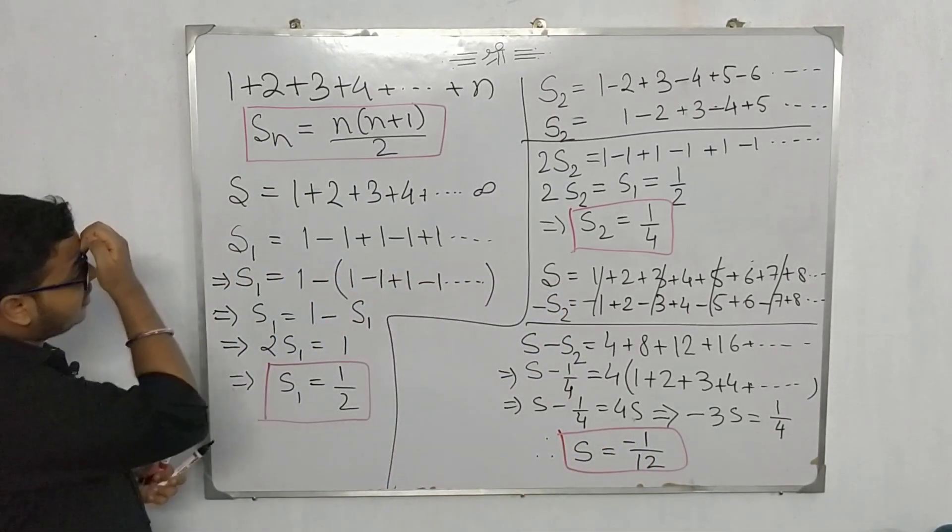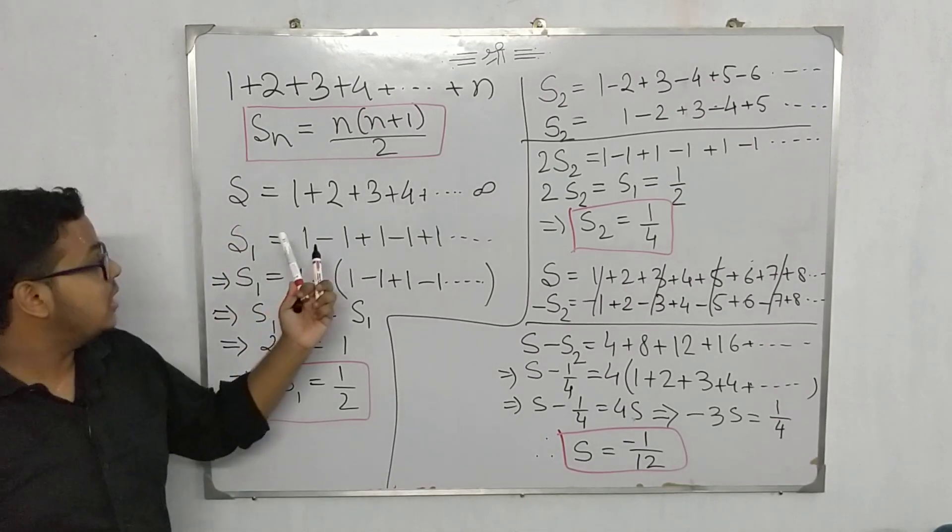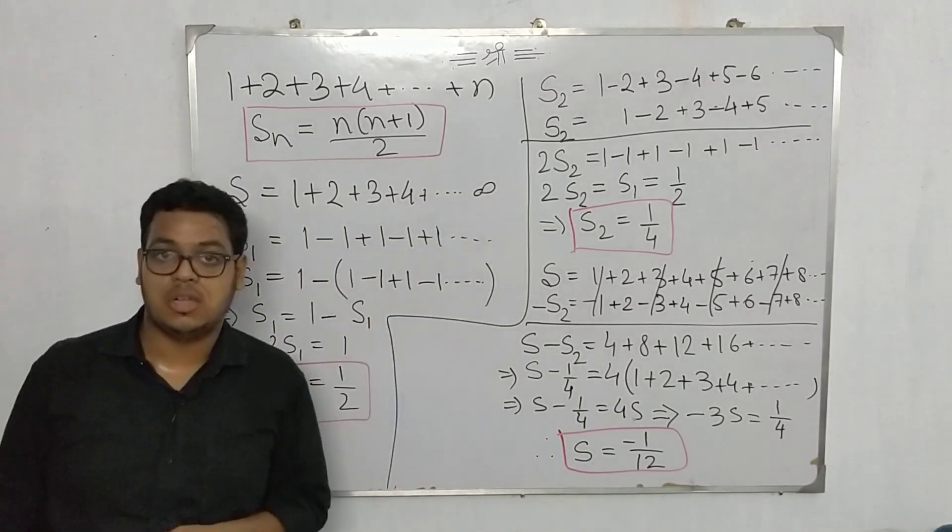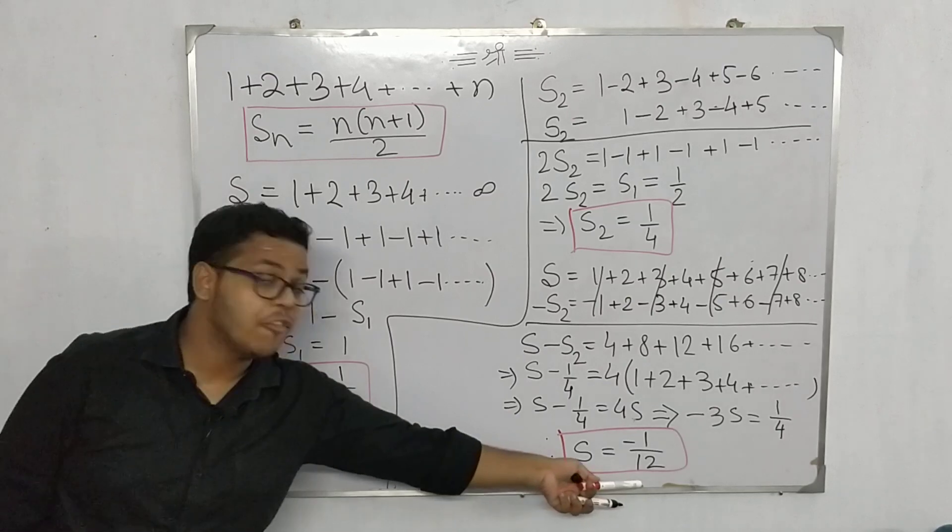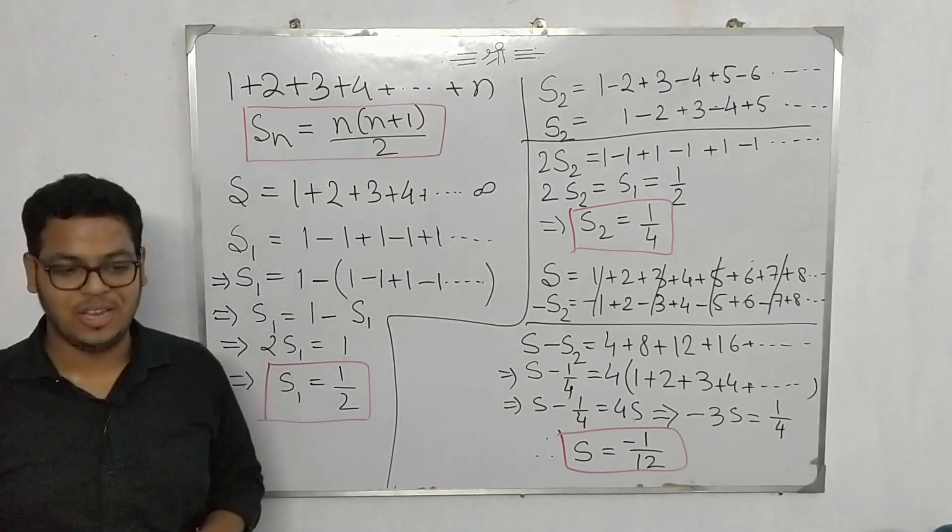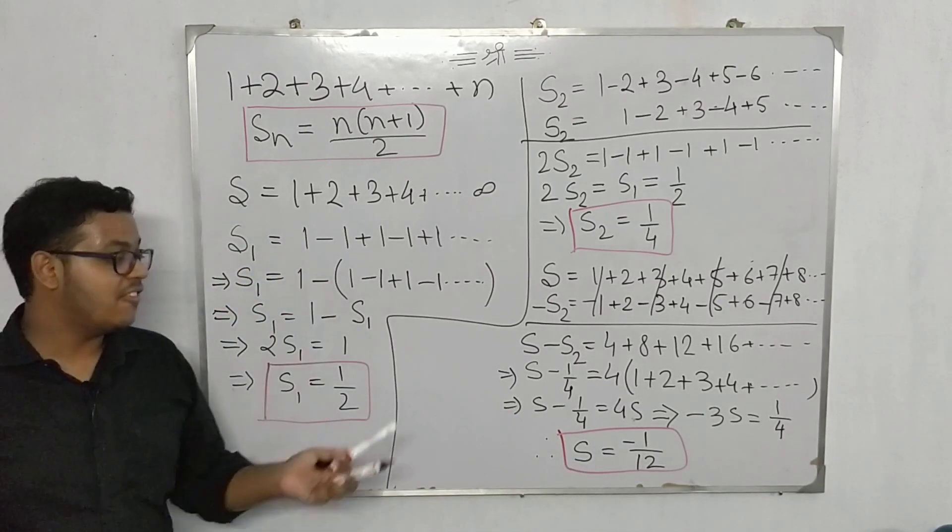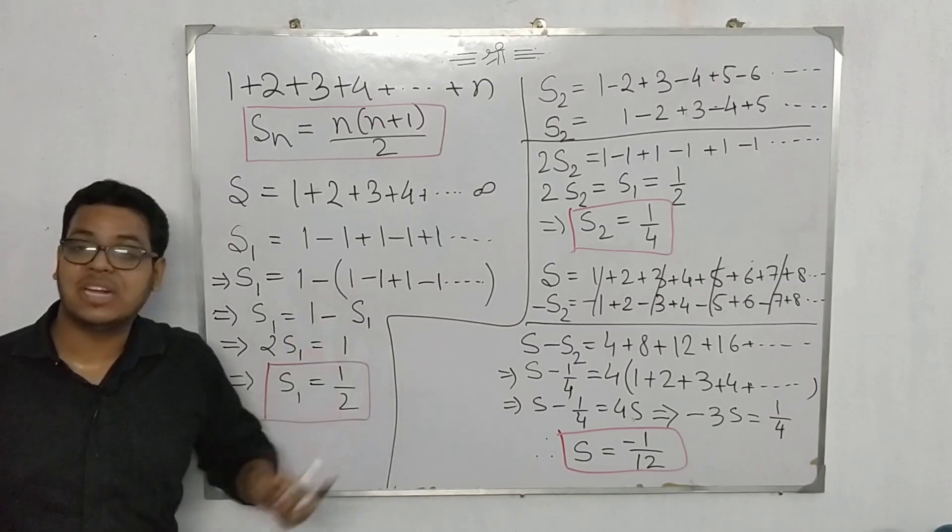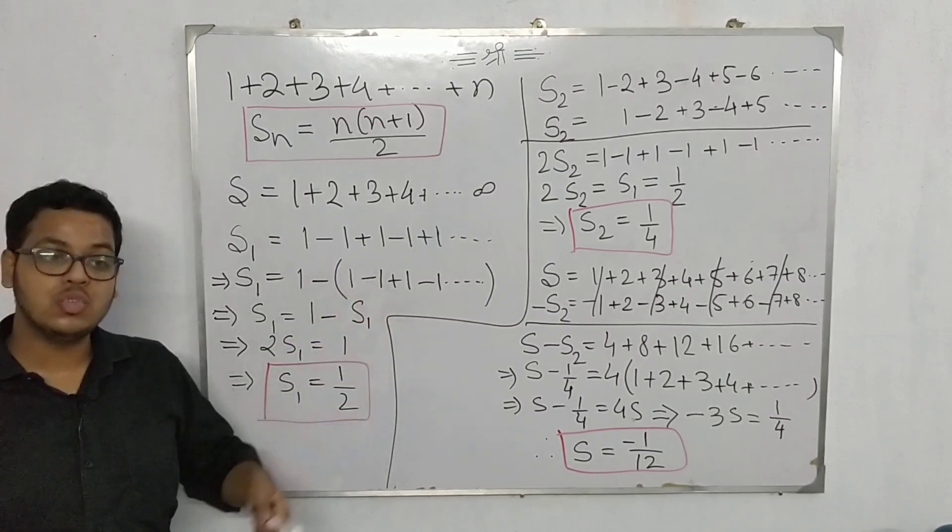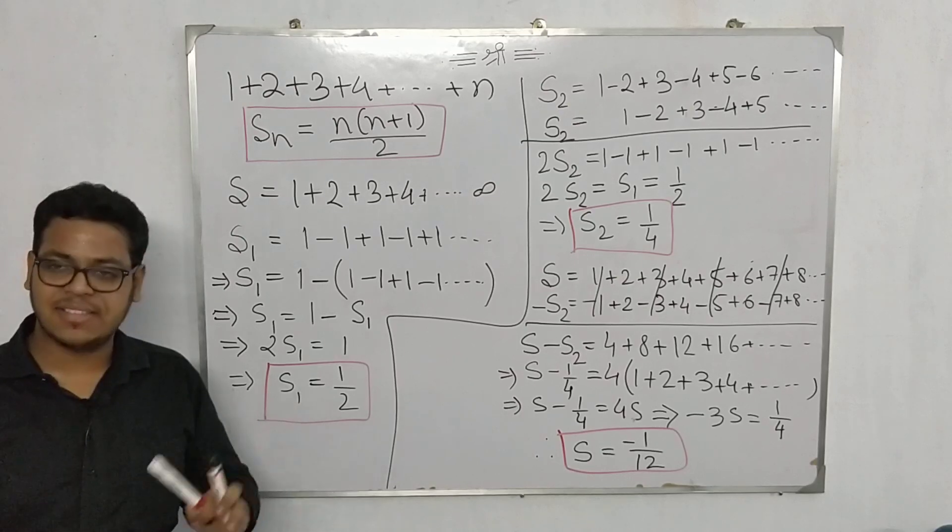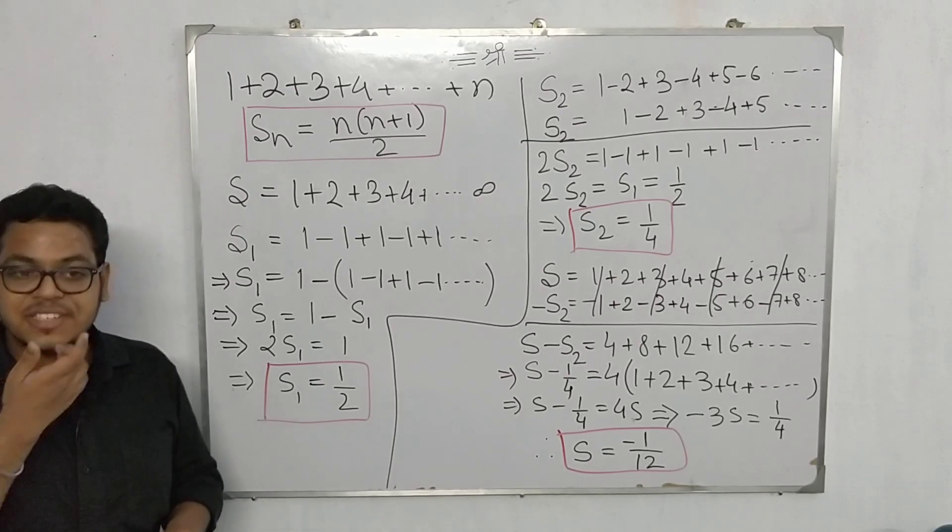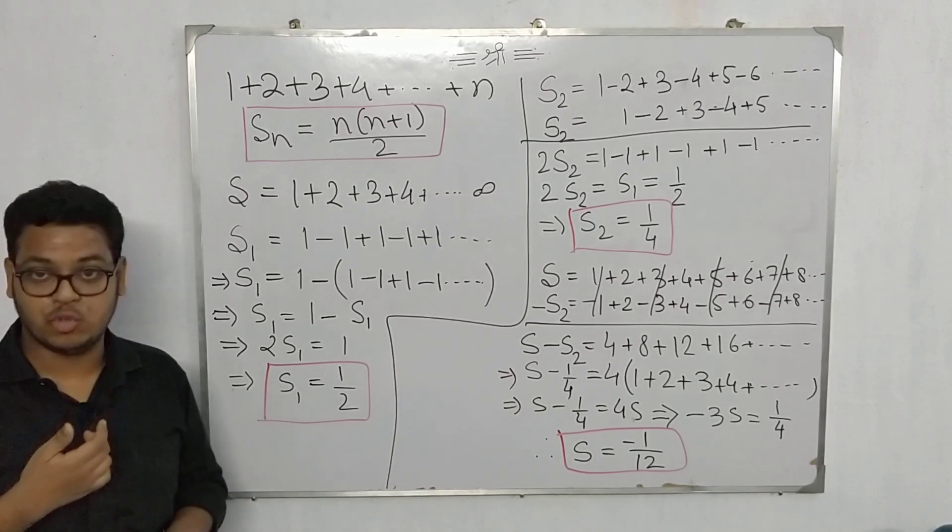Now you see, we started with a series which is actually the sum of all positive natural numbers and we get a negative fraction. Isn't that peculiar? But actually this is a very proper and pertinent proof and it has been used in many quantum physics and other higher level physics, and it was first given by Ramanujan. So with this we come to end of today's video.